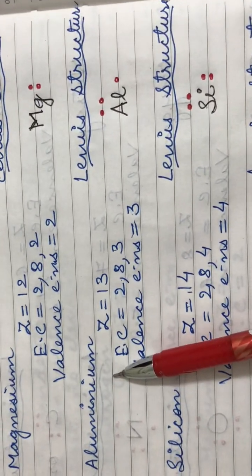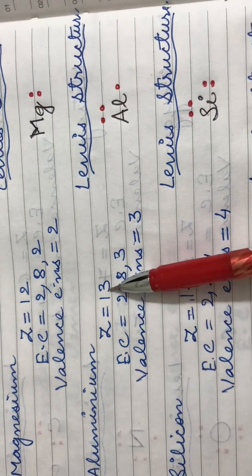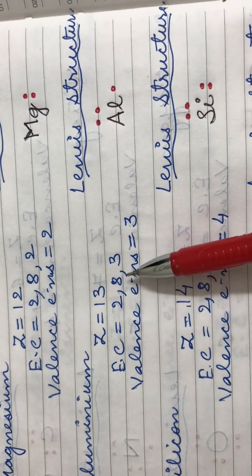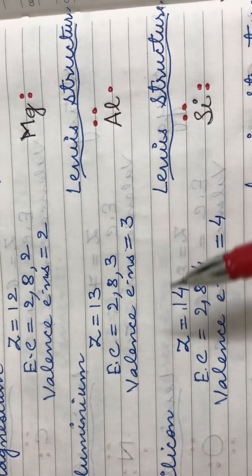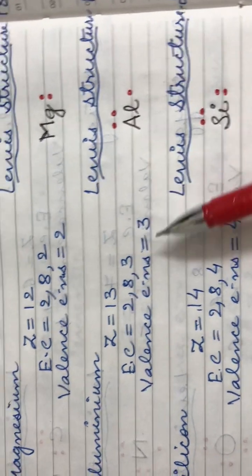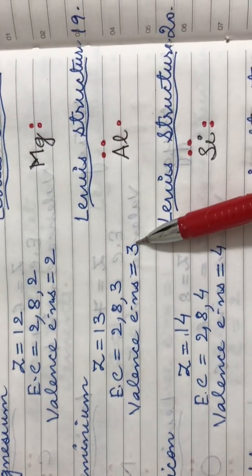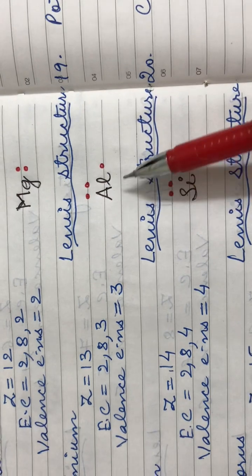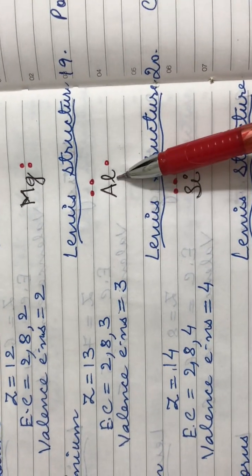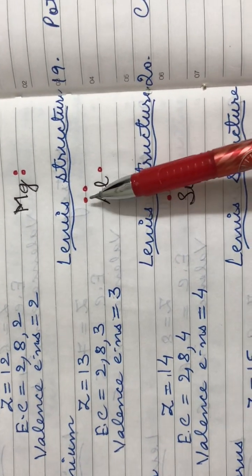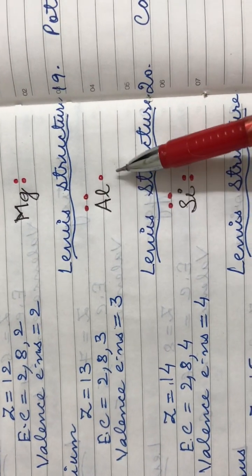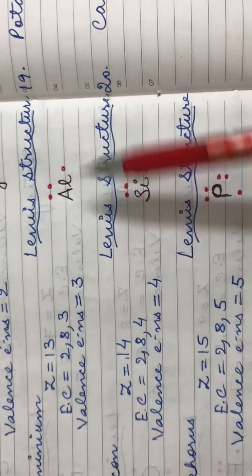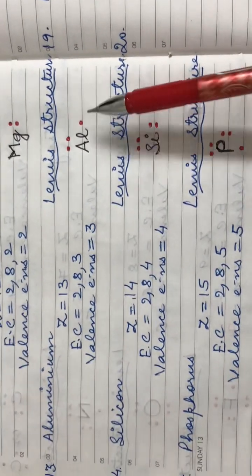Next element is aluminium. It has an atomic number of thirteen. Its electronic configuration is 2,8,3 and it has three valence electrons. Therefore, its Lewis structure is the symbol Al with two dots at the top paired together and the third electron on the right-hand side.